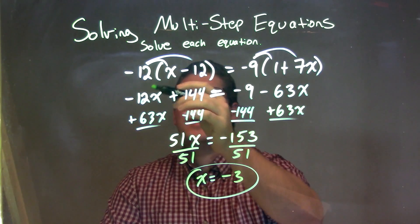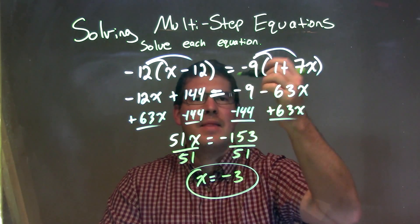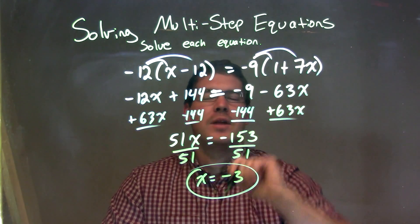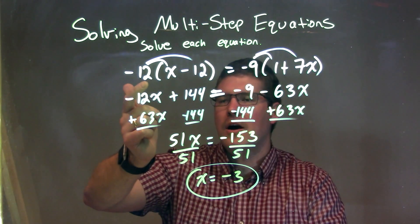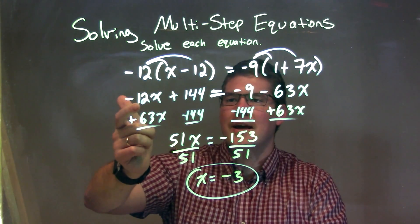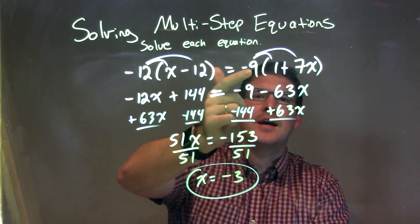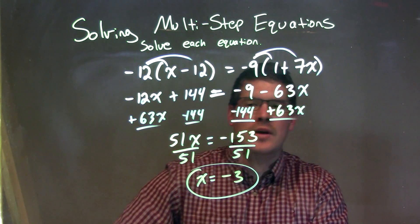Let's recap. We're equal to negative 9 times 1 plus 7x. I distribute for both parentheses the corresponding numbers. Negative 12 across here would be negative 12x plus 144, and negative 9 giving me negative 9 minus 63x.